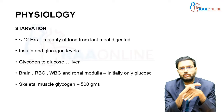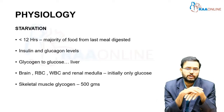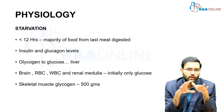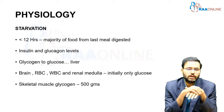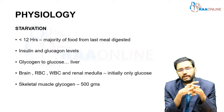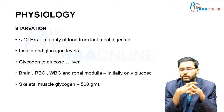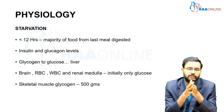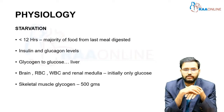In a person who has not eaten for less than 12 hours, the majority of the food from the last meal has been digested by 12 hours. Insulin levels decrease and glucagon levels rise. Subsequently, the glycogen within the liver is converted into glucose by a process called glycogenolysis.